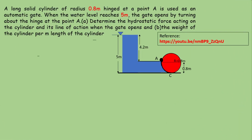This problem deals with the determination of hydrostatic force on a curved surface. The figure shows a long solid cylinder of radius 0.8 meter, hinged at point A, used as an automatic gate. When the water level reaches 5 meters, the gate opens by turning about the hinge at point A. We have to determine the hydrostatic force acting on the cylinder, its line of action, and the weight of the cylinder per meter length.